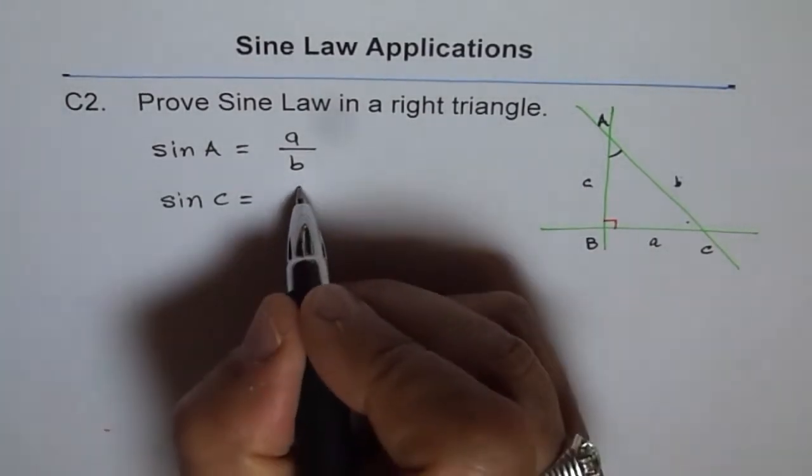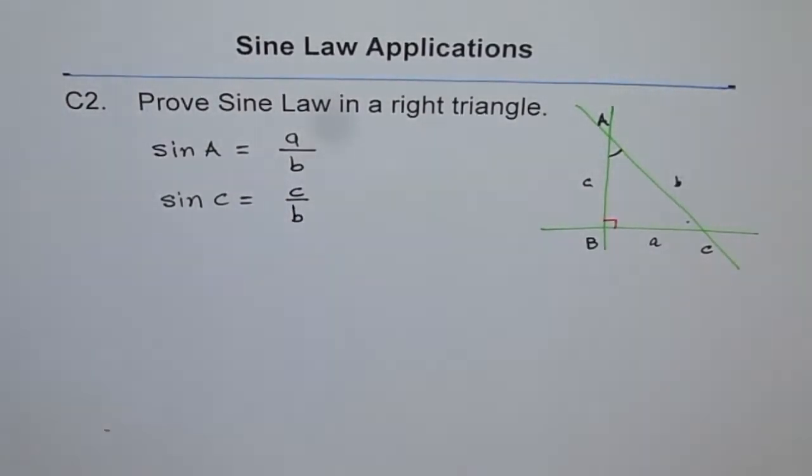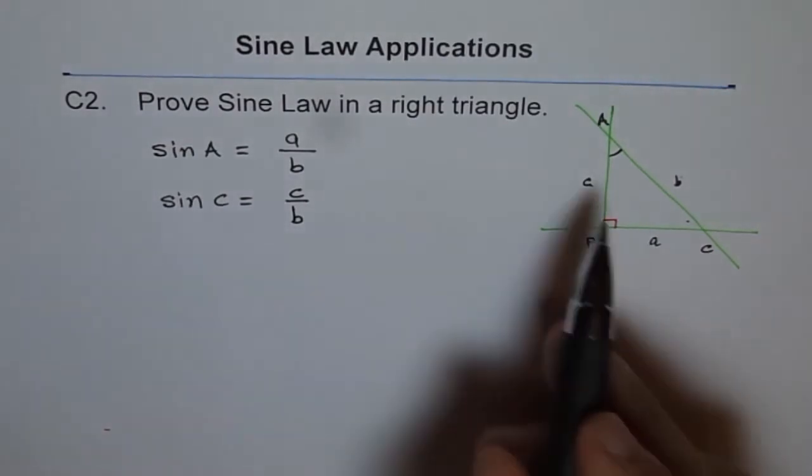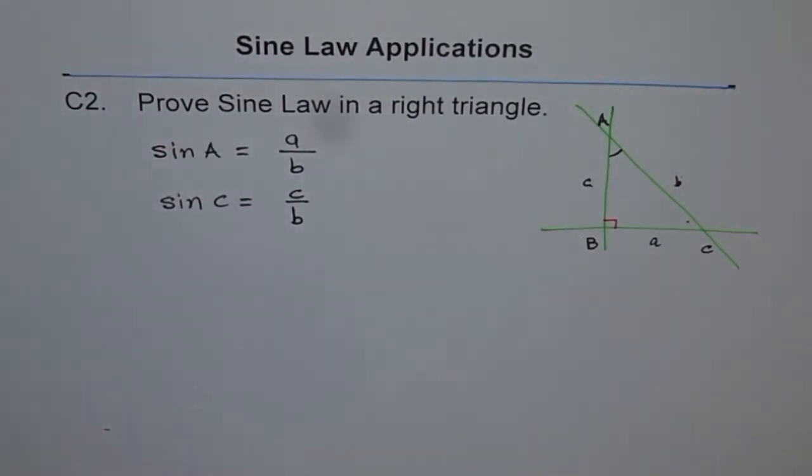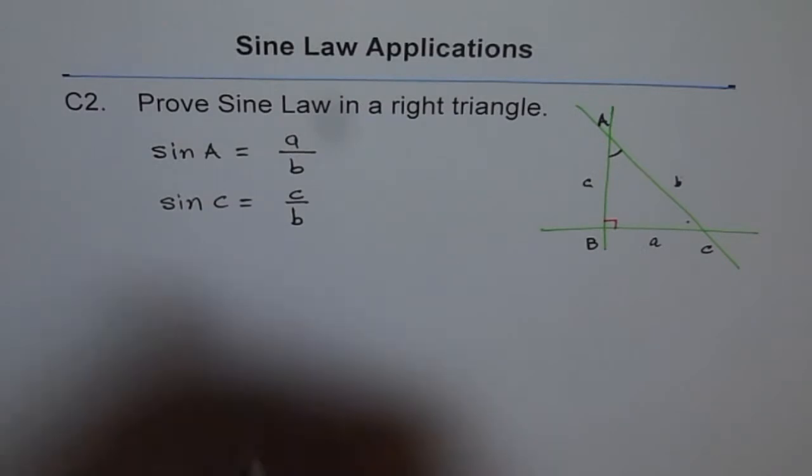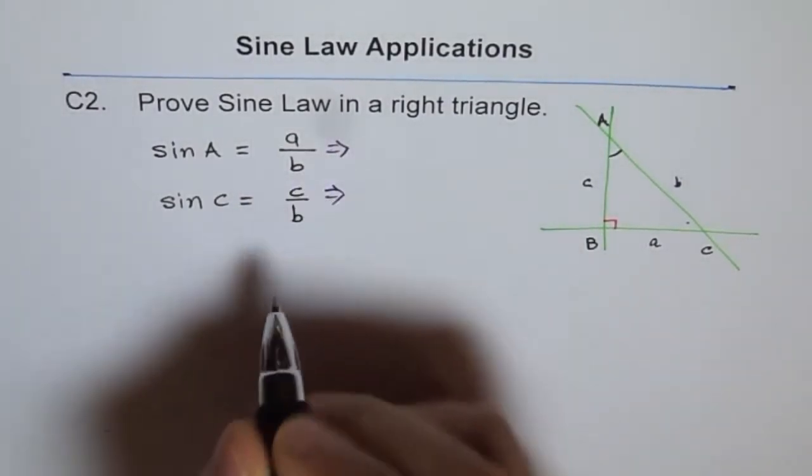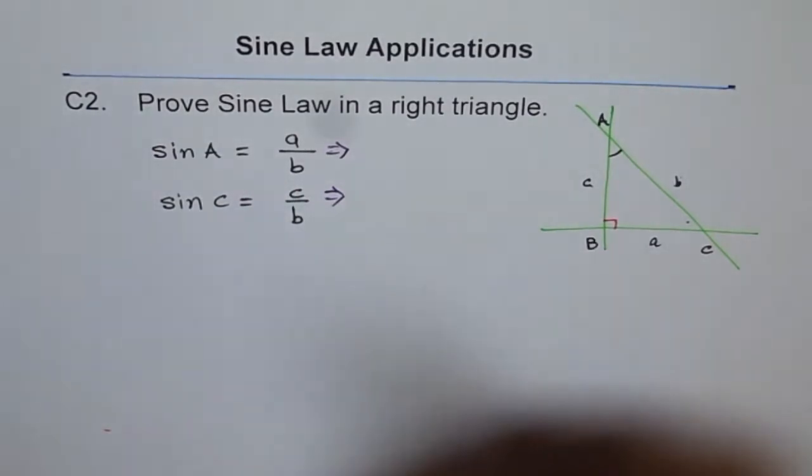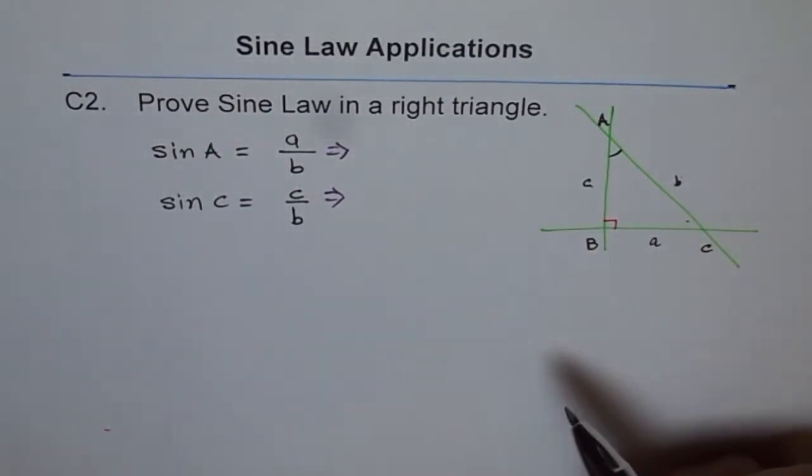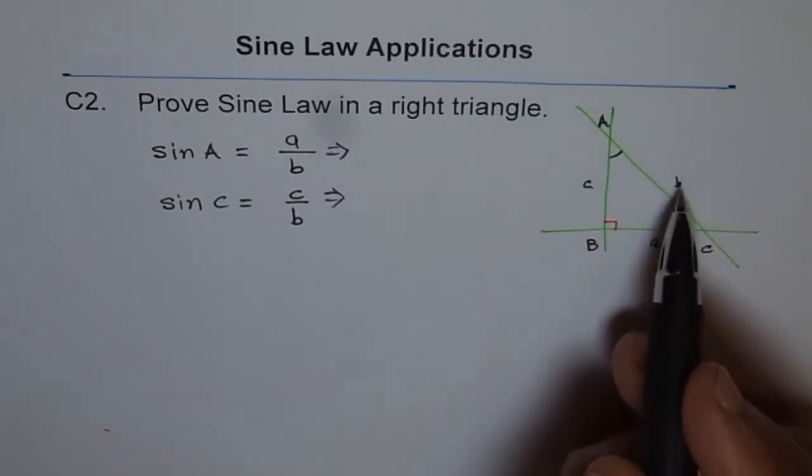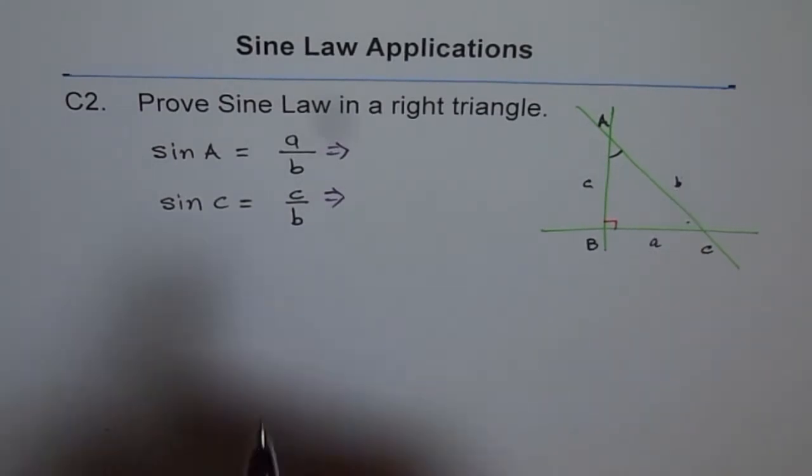We know sin A and sin C from a right triangle, not a big deal. But the important thing here is let's see how we can relate b from both cases. We have b in both cases. Of course, the hypotenuse, when we're talking about sine, is opposite over hypotenuse, so we'll get the side b which is the hypotenuse here.